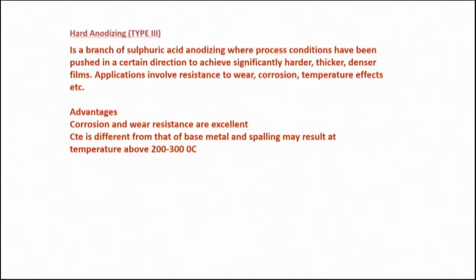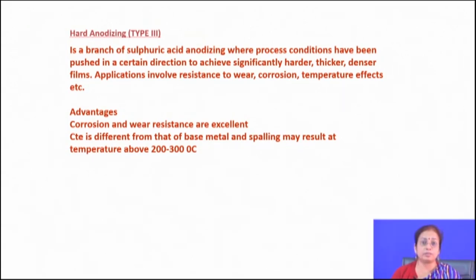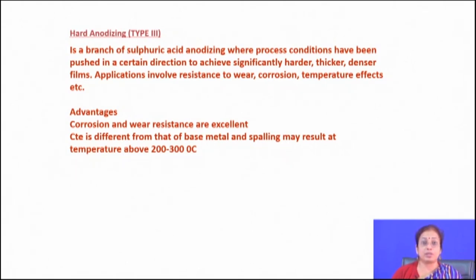Another type of anodizing is hard anodizing, where sulfuric acid anodizing process conditions are pushed to a level such that significantly harder, thicker, and denser films are obtained, suited for corrosion and wear resistance applications. The coefficient of friction is different from that of the base metal, and there may be a chance of spallation particularly when the temperature is a little higher.